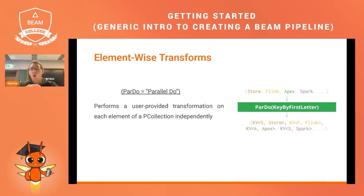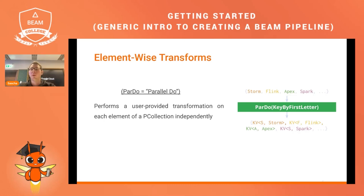In the example, we have four words as input into the element-wise transform and we want to key by the first letter, creating a key-value pair. For each word we end up with a key-value pair: S for Storm, F for Flink, A for Apex, and S for Spark.